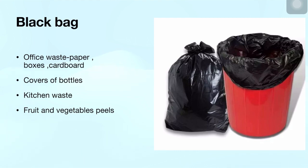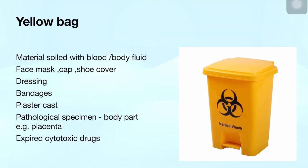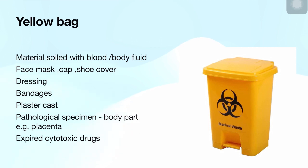Next is the yellow bag. Yellow bag is used for animal or human waste, material soiled with blood and body fluid, your face mask, cap, shoe cover, PPE, dressings, bandages, plaster cast, pathological specimens like body parts, placenta, and expired cytotoxic drugs. These are thrown into the yellow bag and sent for the common treatment facility.